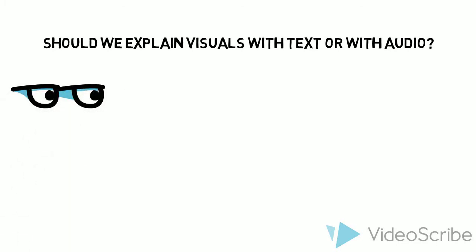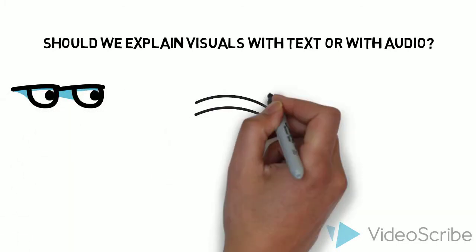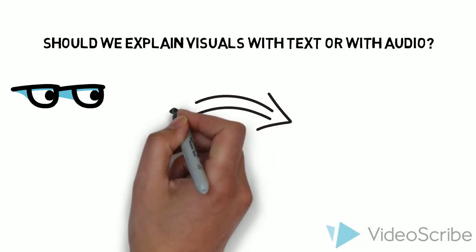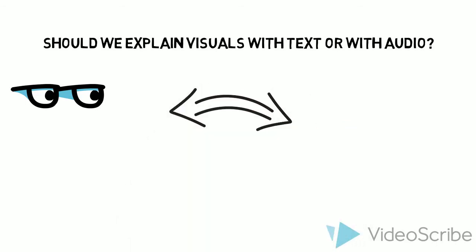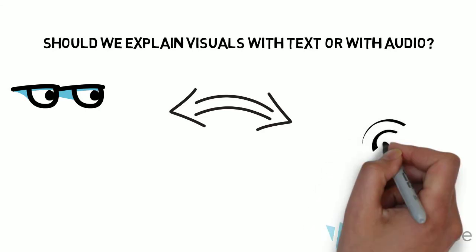Learners have two primary means of input, eyes and ears. By using audio narration, they are able to use both channels, which optimizes their learning. Using a visual and written text is more like using a single channel.